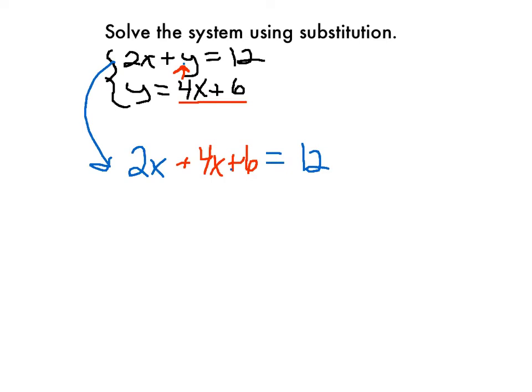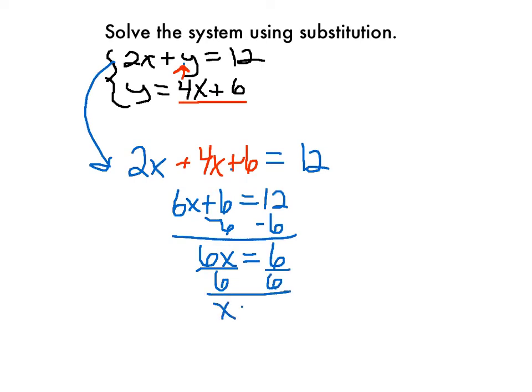The good part about that is now I only have a one variable equation that I can solve. I can combine the x's. This is 6x plus 6 equals 12. I can solve this pretty easily by subtracting 6. 6x equals 6, and dividing by 6 I get x equals 1.